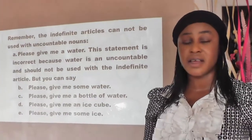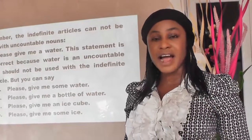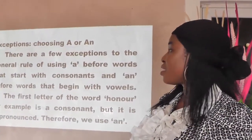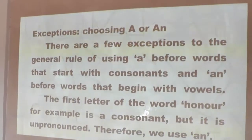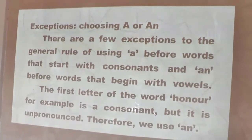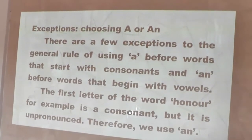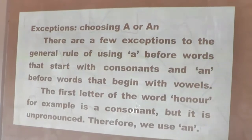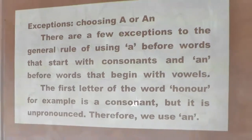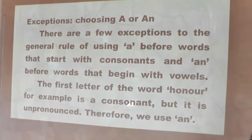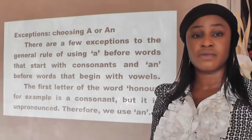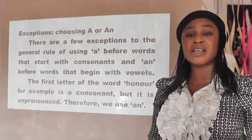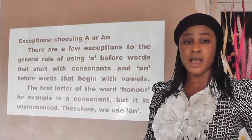Indefinite articles cannot be used with uncountable nouns because uncountable nouns cannot be counted — 'a' and 'an' give number, as in 'a boy' or 'an orange.' Now, there is an exception when choosing between 'a' and 'an.' There are a few exceptions to the general rule of using 'a' before consonants and 'an' before vowels. For example, the word 'honor' starts with H — a consonant — but in spite of its spelling, it sounds like a vowel sound because the H is unpronounced. So we use 'an honor,' not 'a honor.'